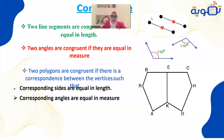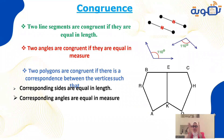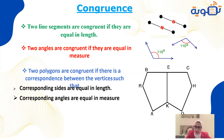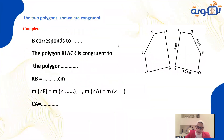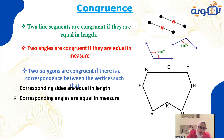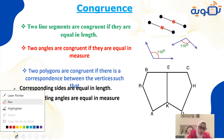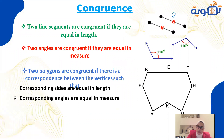Now we'll talk about congruence. Congruence means being exactly the same. Two line segments are congruent if they have the same length — for example, if both are 2 cm, they are congruent.